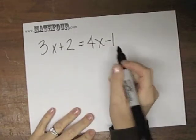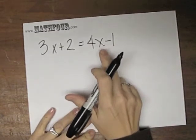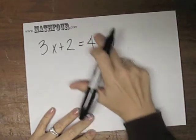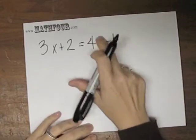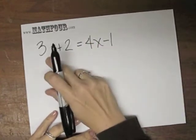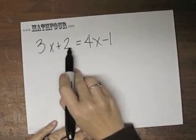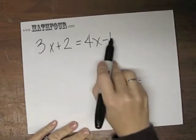We could work out the permutations, but we won't. My convention on mathisnotafourletterword.com is to always isolate the x on the left-hand side so we have coefficient, variable, constant equals constant.